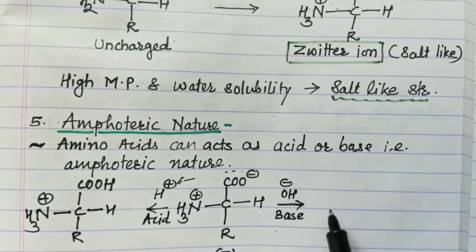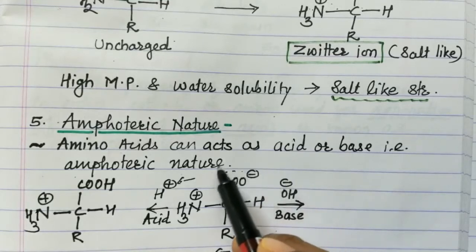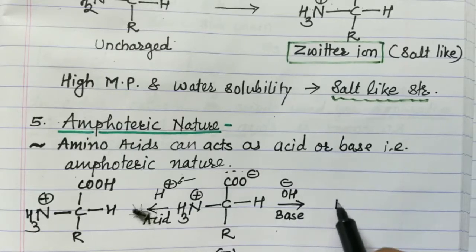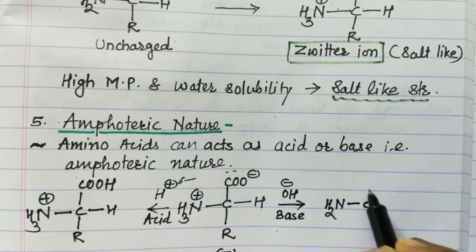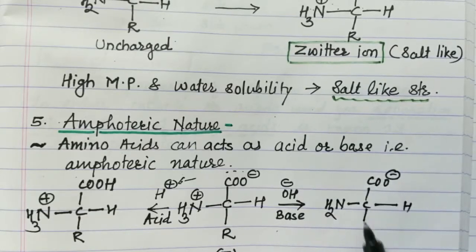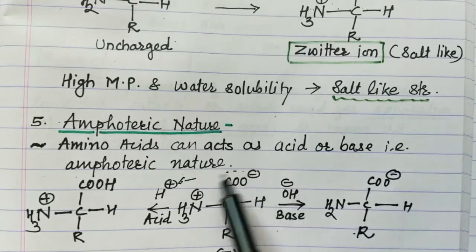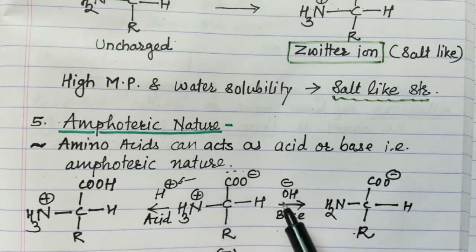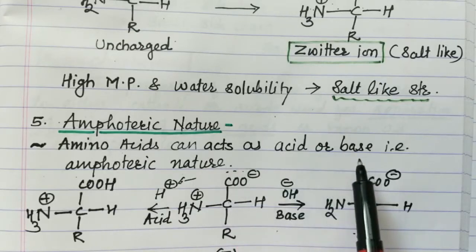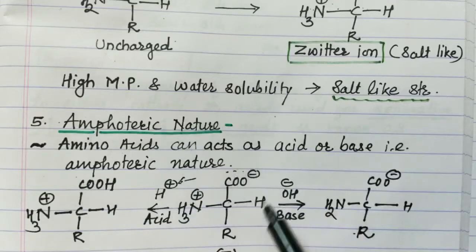Similarly, in basic medium, the OH− picks up the proton from the ammonium ion (NH3+), giving the species NH2COO−. In basic medium, this species acts as an acid because it donates the proton. So amino acids can act as acid as well as base — this is the amphoteric nature of amino acids.